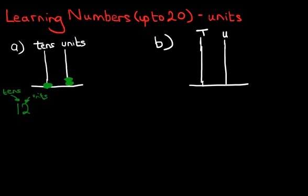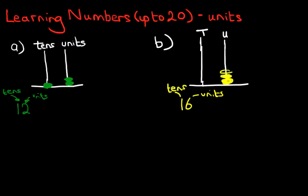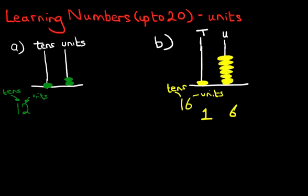The question now is, how do we represent 16 on the abacus? Well, the six is the units and the one is the tens. So we start from the right — six units: one, two, three, four, five, six. So those are our six units. We've also got one 10. So we can write this down here: one, six — 16. That's how it's shown.